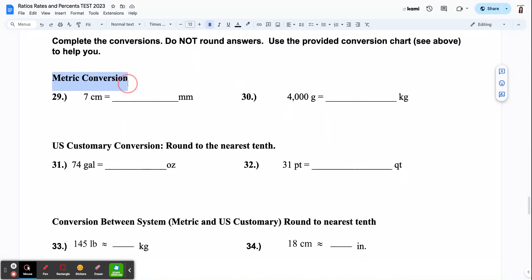So this is where you use that mnemonic device. Kings have blah, blah, blah, or you could say King Henry, blah, blah, blah. I'm not going to tell you because I think you need to know that. But that's how you're going to know how to convert from centimeters to millimeters and 4,000 grams to kilograms. A hint is to remember that you always have a decimal on whole numbers. They're just invisible right now.